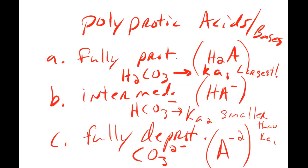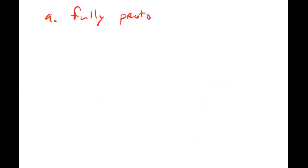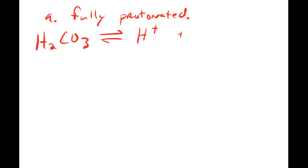The purpose of this video is to deal with the fully protonated form. Using our example H2CO3 — carbonic acid — that's what we're working with here. Since it's a weak acid in its fully protonated form, it sets up an equilibrium with water in which the first proton, and only the first proton, is donated, making bicarbonate and H⁺. From the data table, Ka1 for carbonic acid is 4.46 × 10⁻⁷.